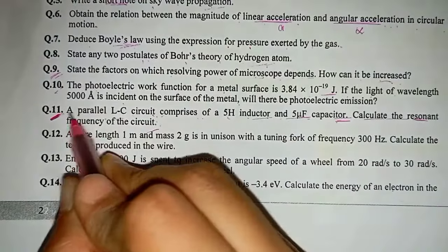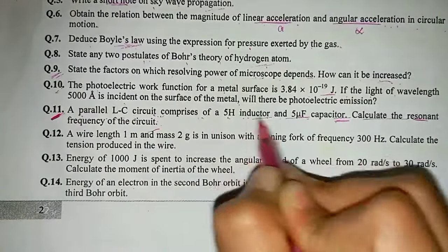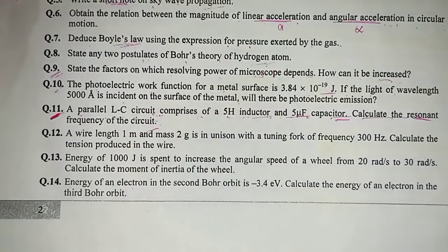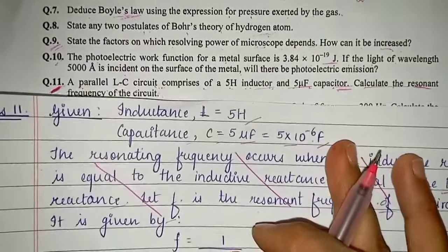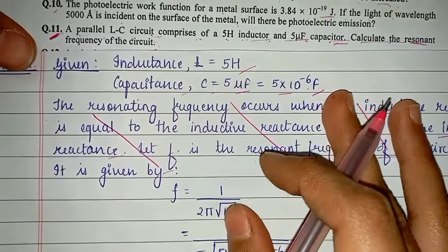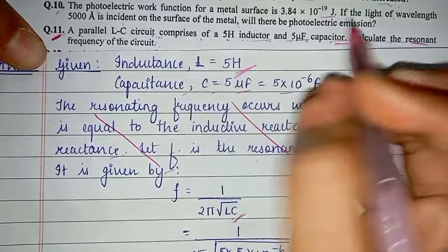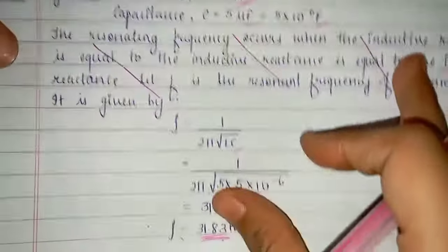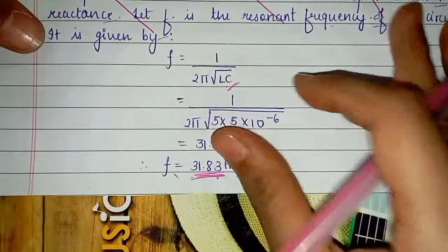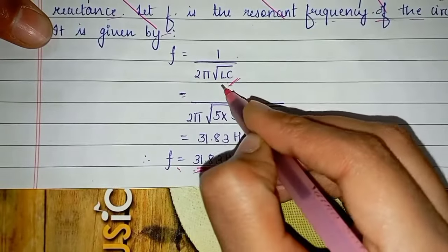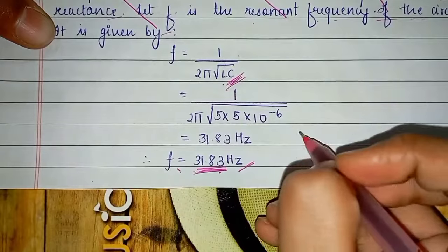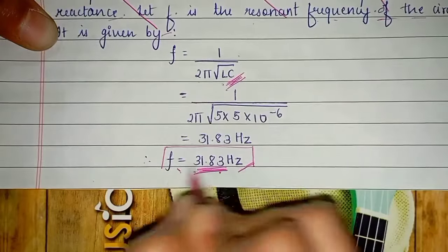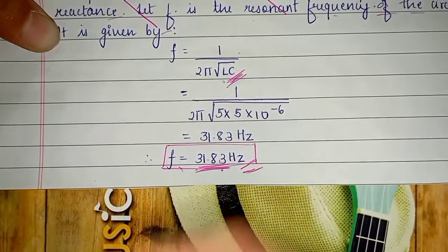Question number 11: a parallel LC circuit has a 5 H inductor and a 5 μF capacitor. Given: L = 5 H, C = 5×10⁻⁶ F. Resonant frequency F = 1/(2π√LC). Substituting values, the resonant frequency is 31.83 Hz.